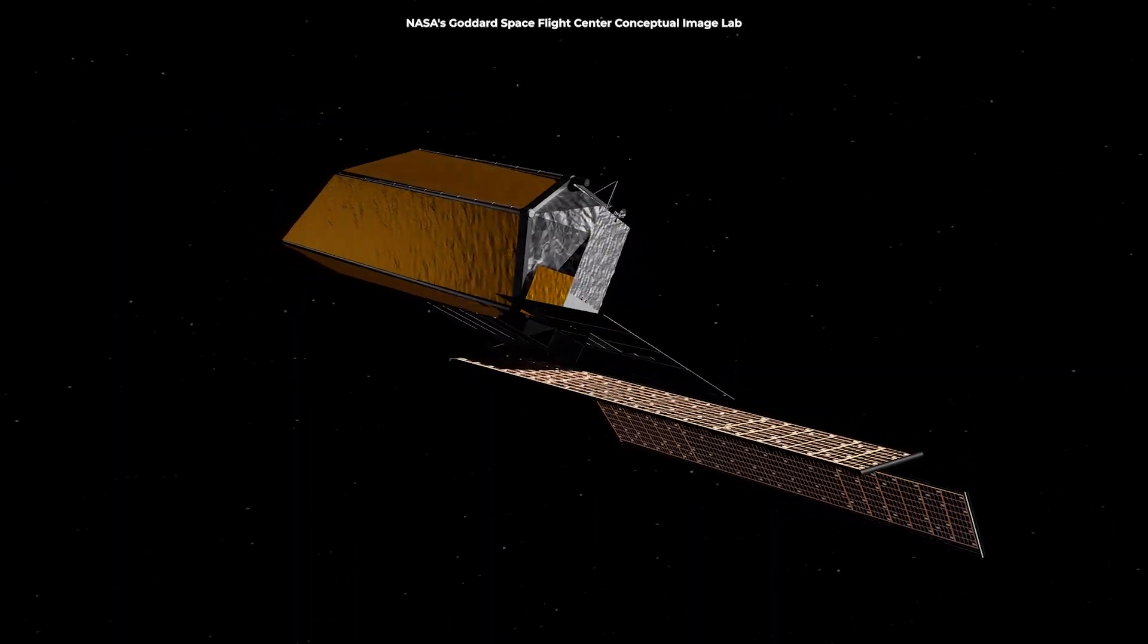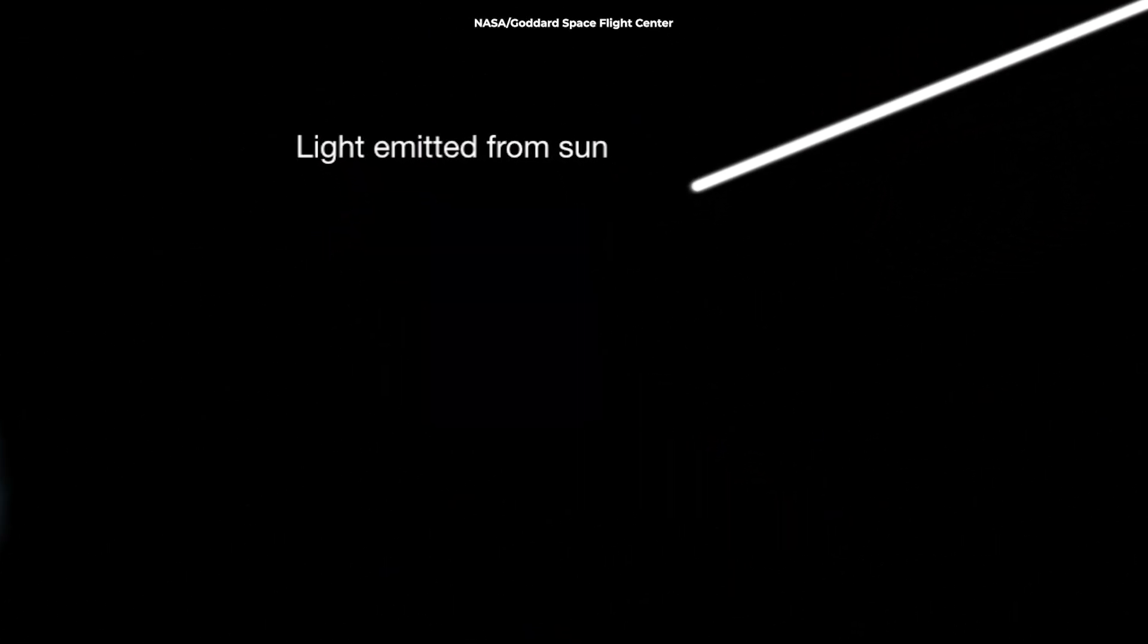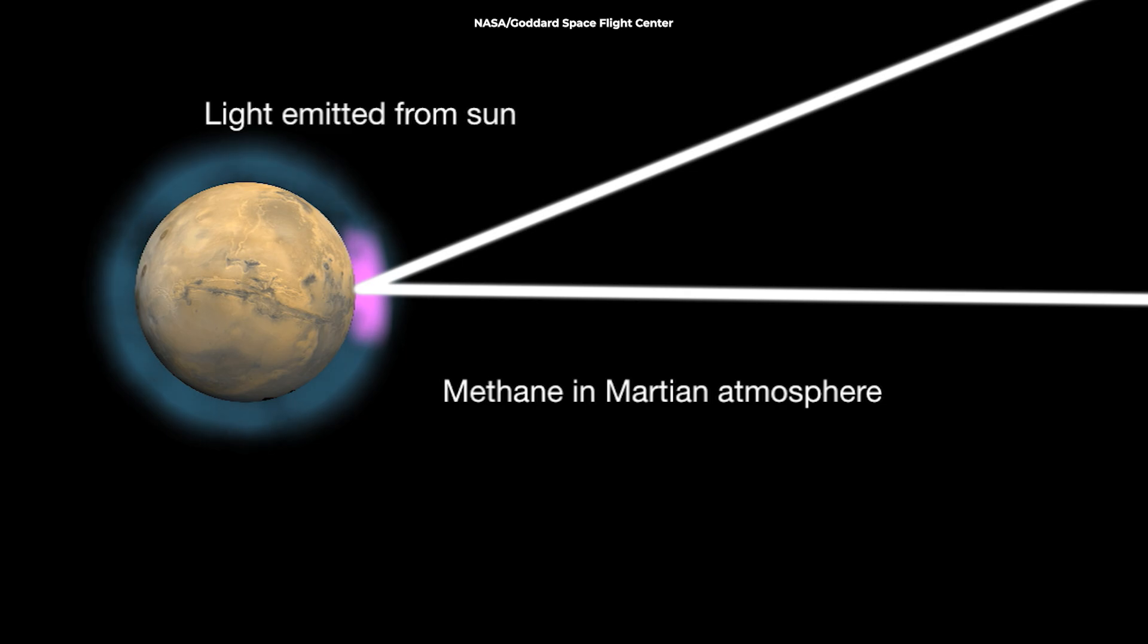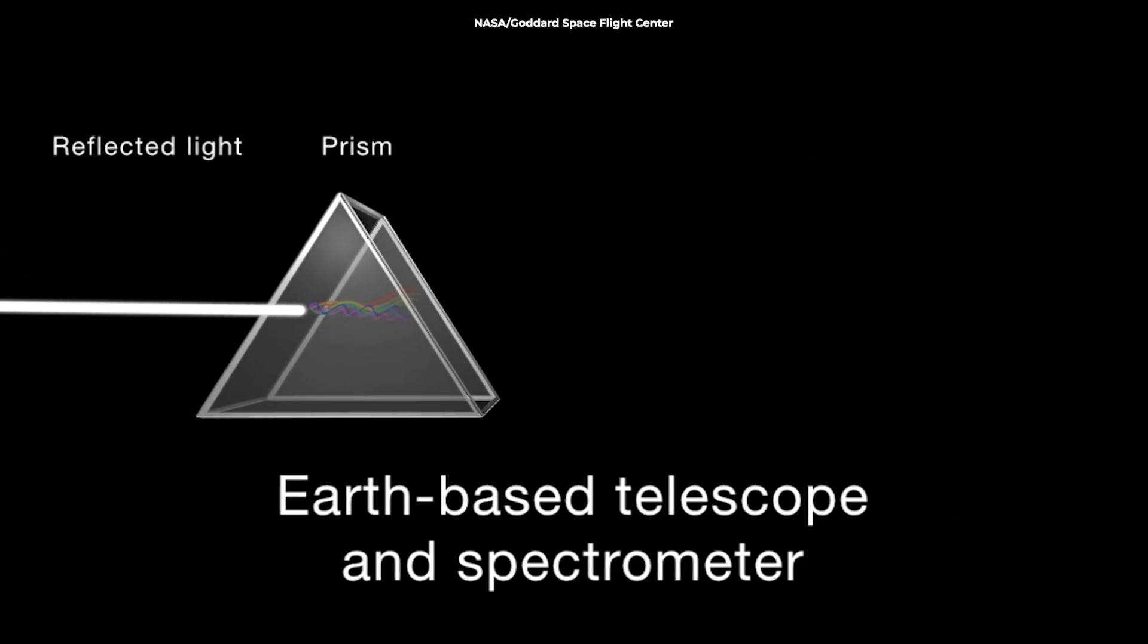So how will the Habitable Worlds Observatory detect these signatures? When light passes through a planet's atmosphere, different molecules absorb different colors of light. It's like each molecule has its own unique barcode.